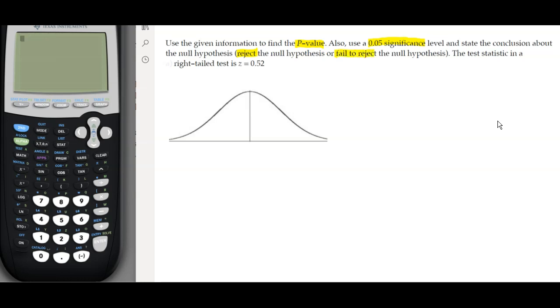The case that we're going to study for this example is a right tail distribution and the z value is 0.52. So I think the best way is to start by graphing this scenario which is a right tail z test.